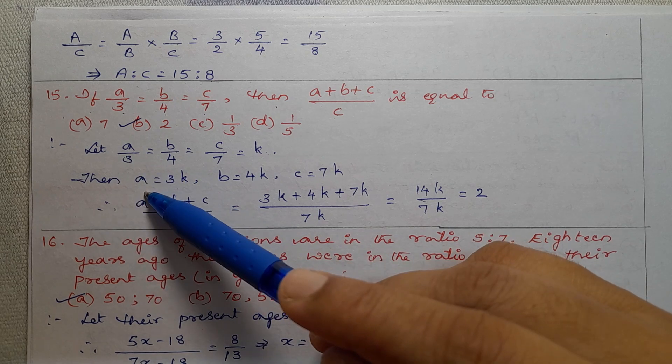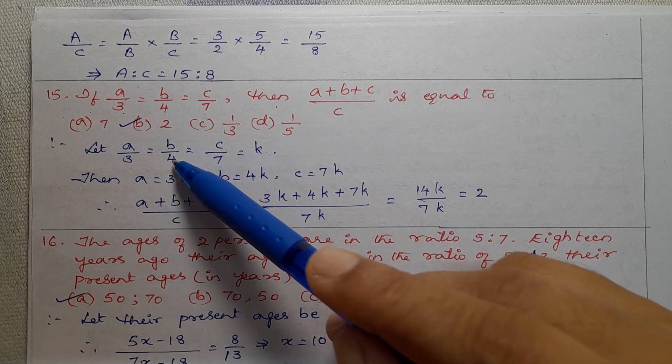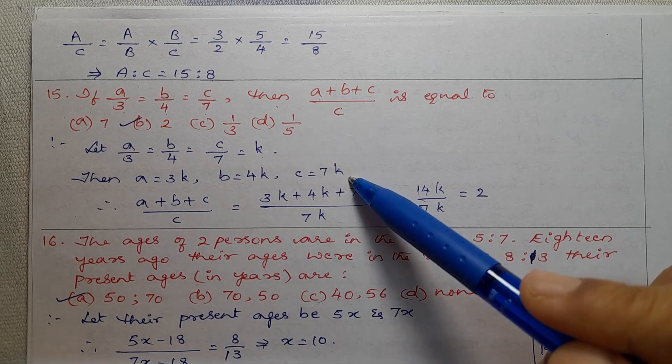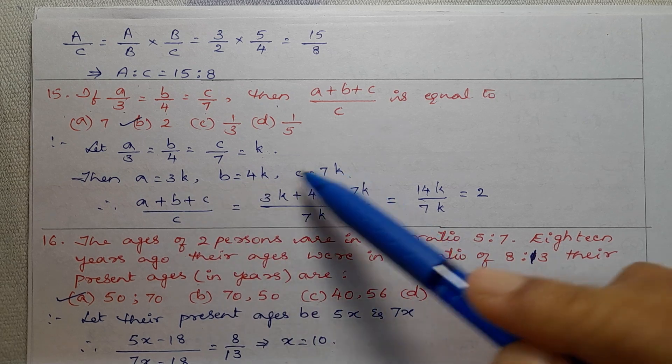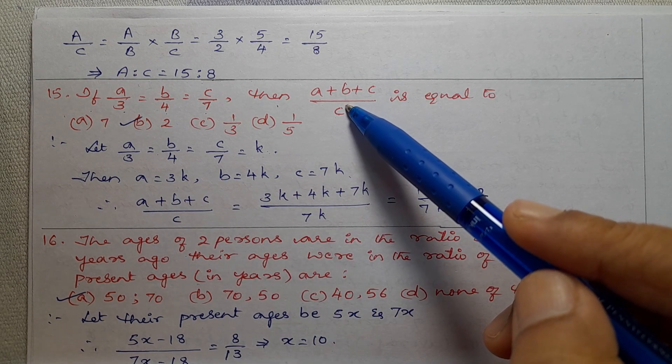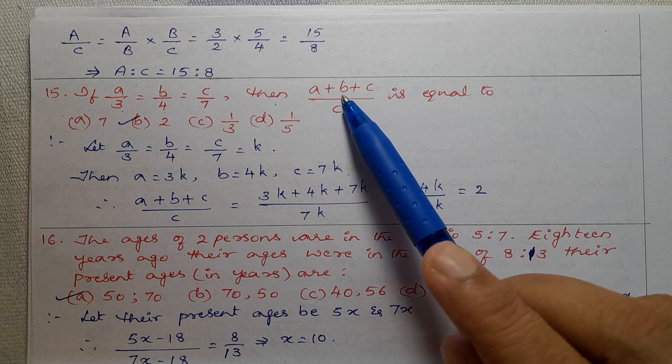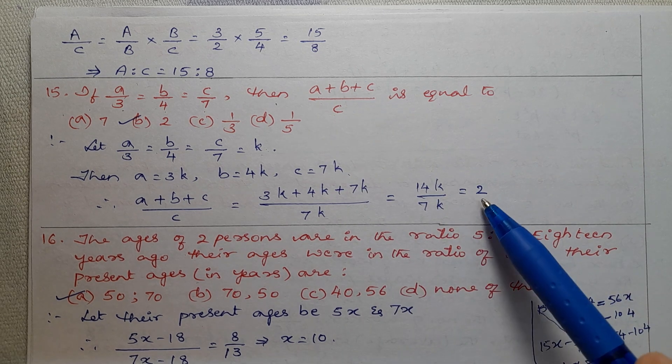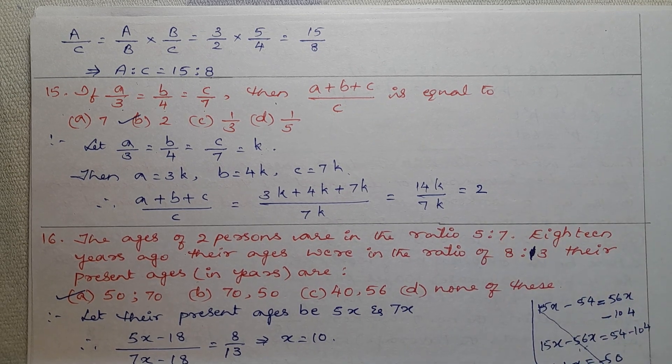Then A equal to 3K, B equal to 4K, C equal to 7K. After that, substitute these ABC values here. We will get A plus B plus C divided by C is 2 as the answer. Okay, thank you so much.